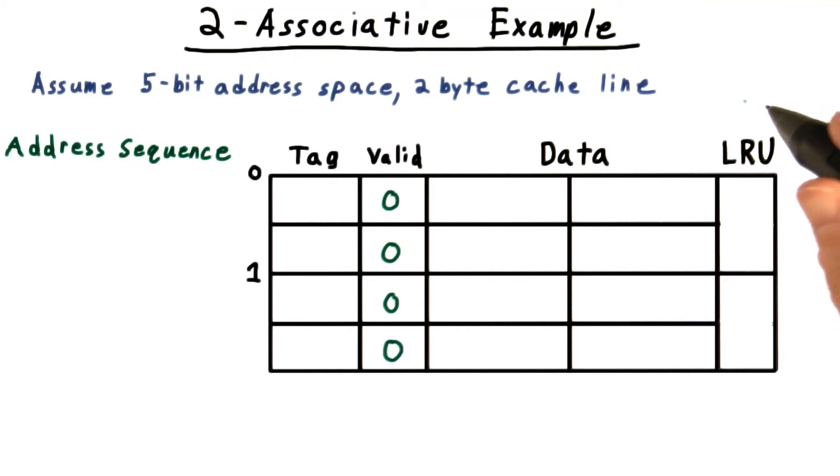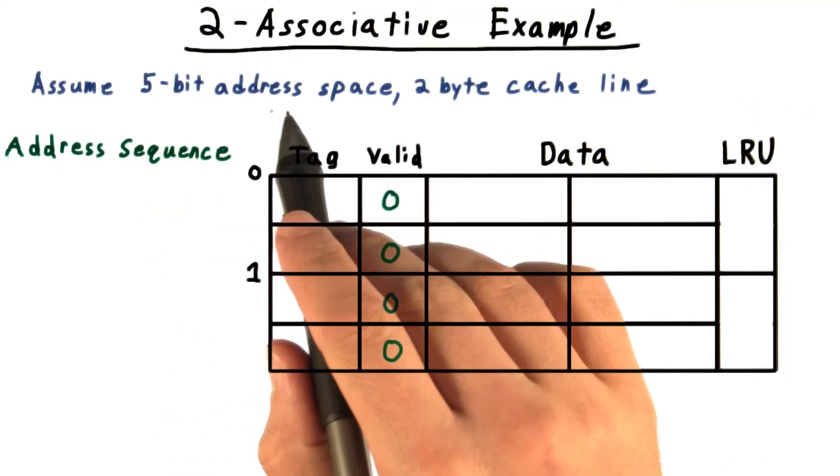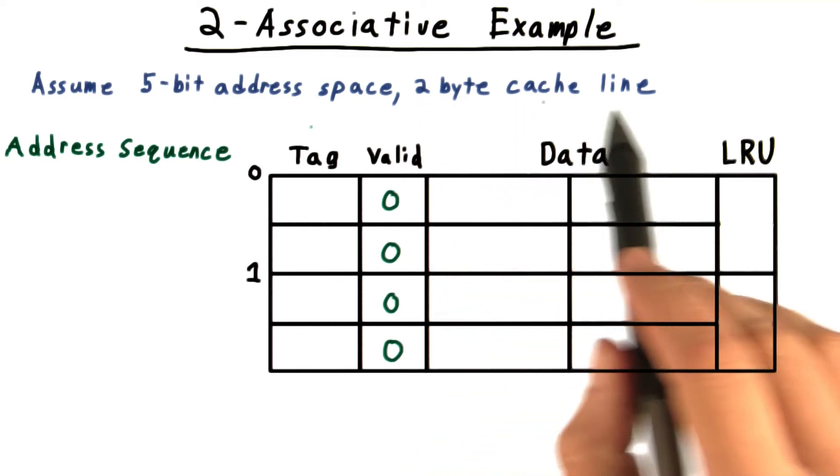Now let's see a two way set associative cache in action. We'll assume a five bit address space with two byte cache lines.